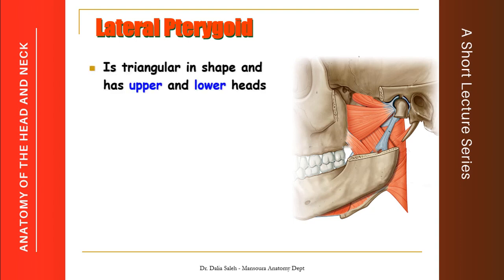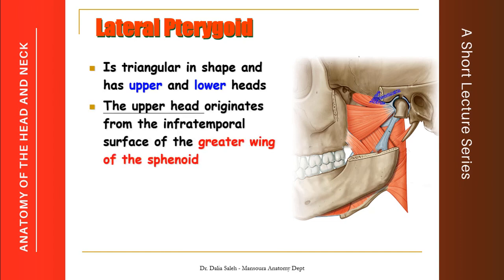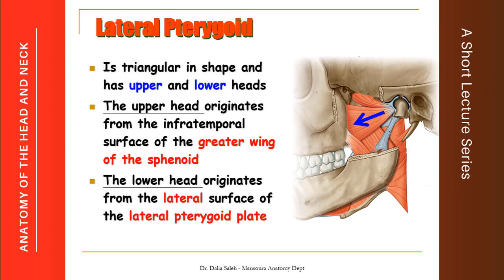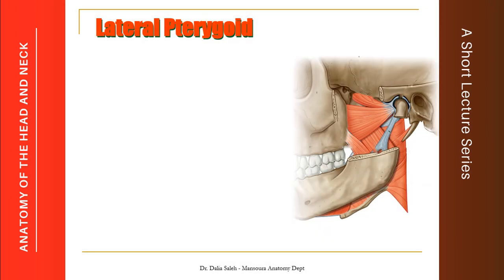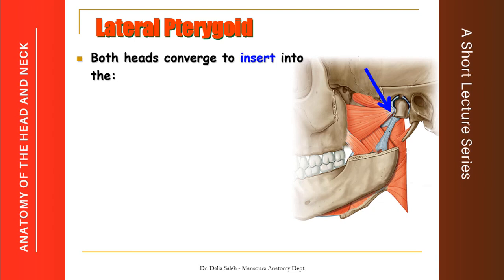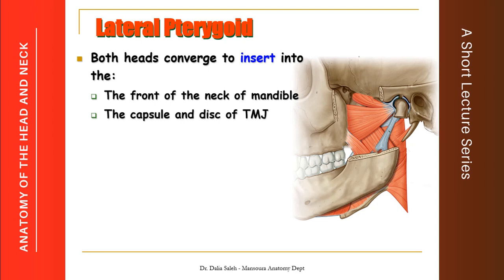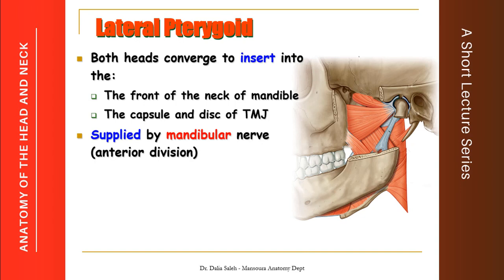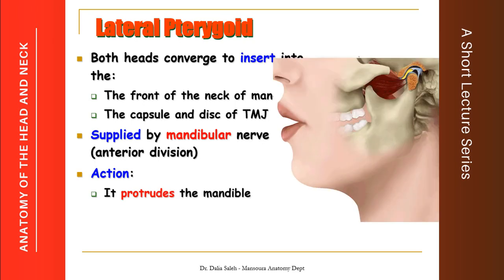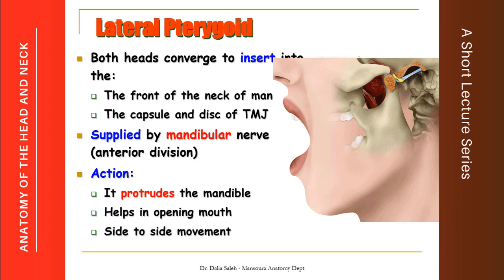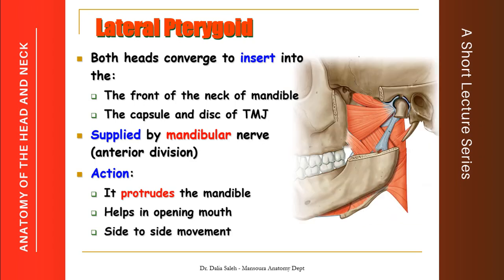The lateral pterygoid is triangular in shape and is formed of upper and lower heads. The upper head originates from the infratemporal surface of the greater wing of the sphenoid bone, while the lower head originates from the lateral surface of the lateral pterygoid plate. Both heads converge into a single tendon which inserts into the front of the neck of the mandible at an area called the pterygoid fovea. It also inserts into the capsule and disc of the temporomandibular joint. It is supplied, like the rest of the muscles of mastication, by the mandibular nerve, but from its anterior division. When the lateral pterygoid contracts, it helps in protrusion of the mandible, thus helping in opening of the mouth. The lateral pterygoid and medial pterygoid of the same side, alternating with the two pterygoids of the opposite side, help in side-to-side movement of the mandible as in grinding.